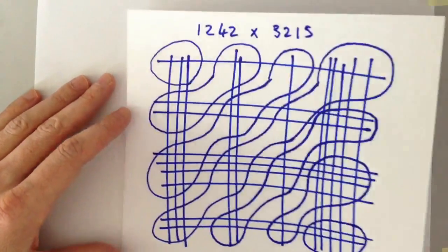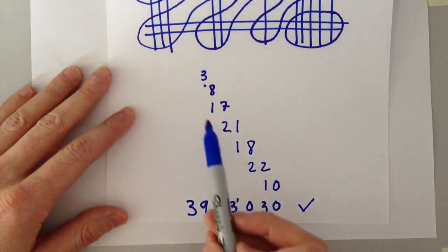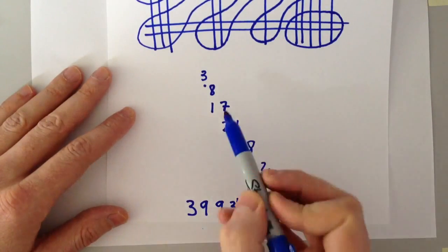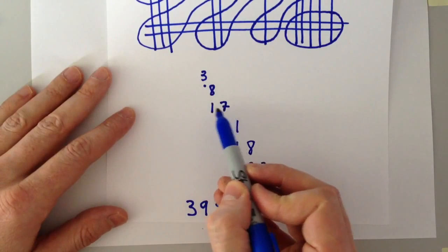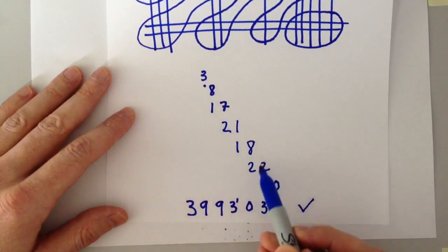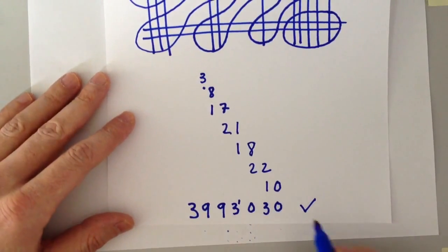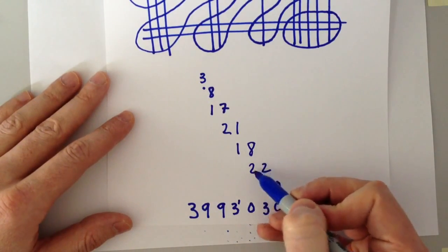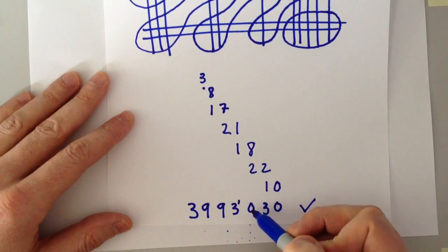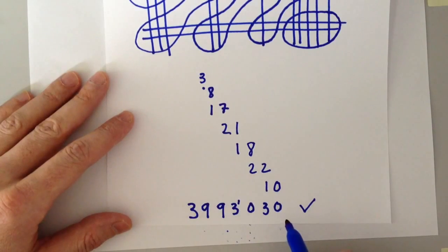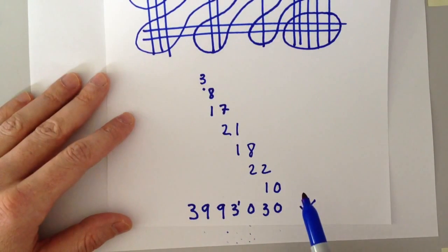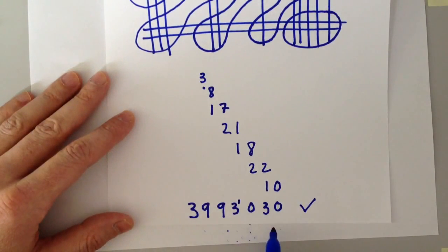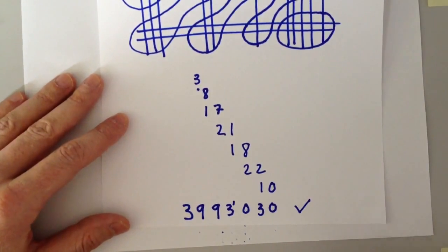Once you've got those, you count up the intersect lines and write them down in a diagonal way with the ten unit going under the previous figure. If it's a single unit, it just goes diagonally into the next column. Then you add up vertically. If you get a situation where 8 plus 2 is 10, you put 0 and carry the 1. So in this case, 1242 times 3215 is 3,993,030. I checked that on the calculator and it's entirely correct.